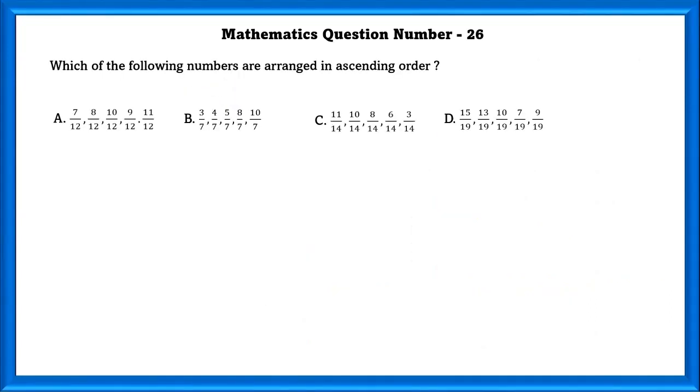Mathematics question number 26. Which of the following numbers are arranged in ascending order? Option B is arranged in ascending order.